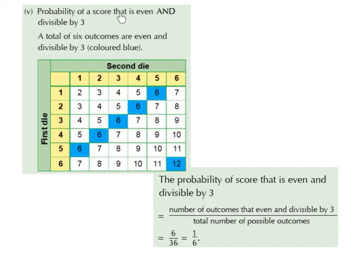Part 5: the probability of a score that is even and divisible by 3. A total of 6 outcomes are even and divisible by 3, coloured in blue. So 6 is clearly an even number and can be divided by 3, and 12 is an even number and can be divided by 3. So altogether we have 6 outcomes that are even and divisible by 3. The probability is 6 divided by 36, which is a sixth.